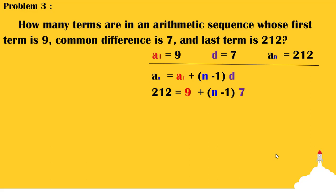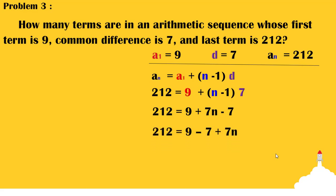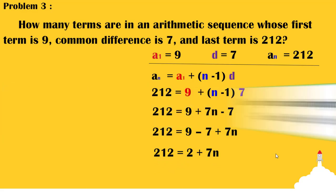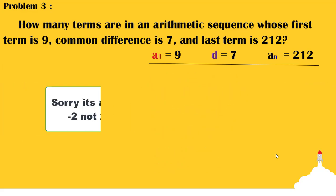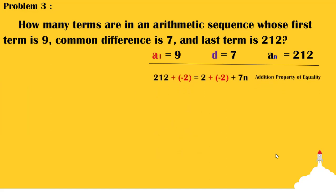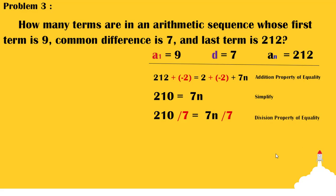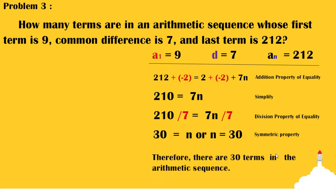We substitute the known values: 212 is equal to 9 plus quantity n minus 1 multiplied by 7. Next, we multiply 7 to quantity n minus 1, giving us 212 is equal to 9 plus 7n minus 7. Rearranging, we have 212 is equal to 2 plus 7n. Applying the addition property of equality, we get 210 is equal to 7n. Then, applying the division property of equality by dividing both sides by 7, we have n is equal to 30. Therefore, there are 30 terms in the arithmetic sequence.